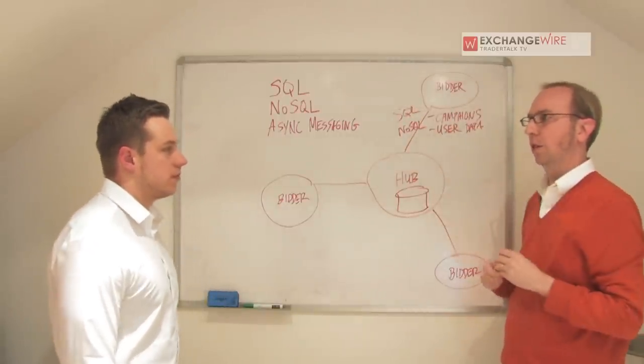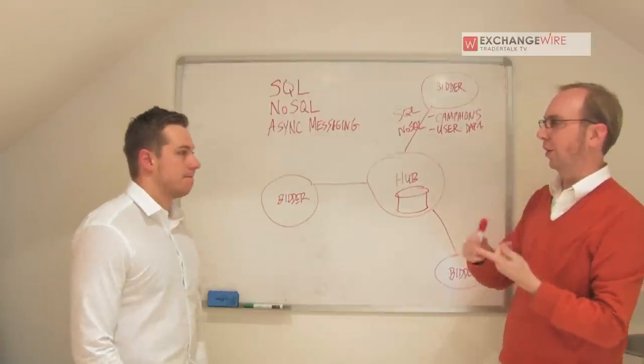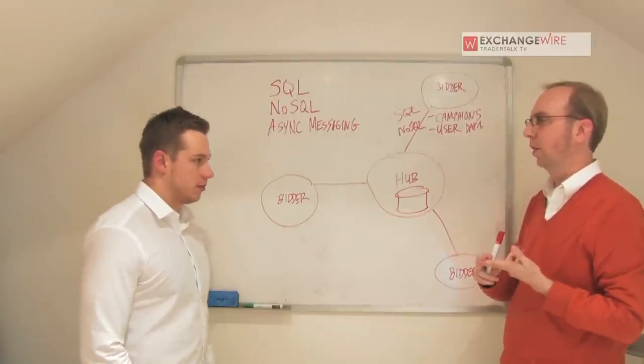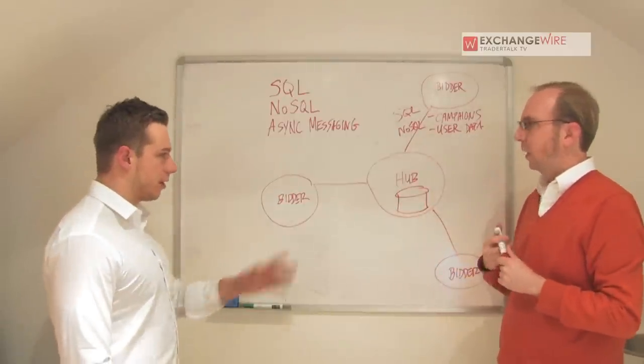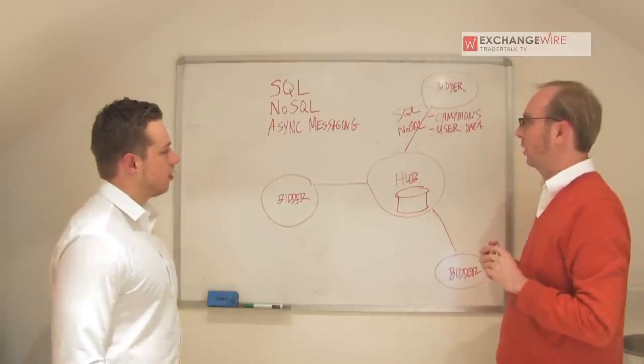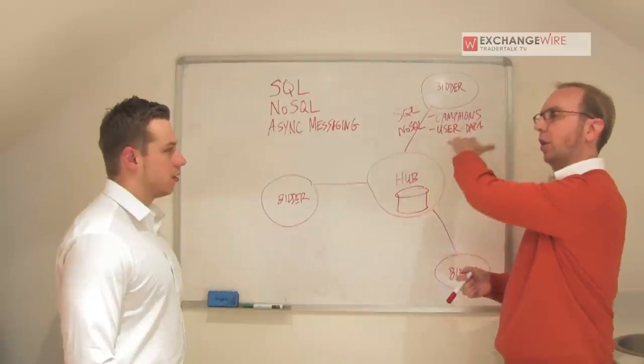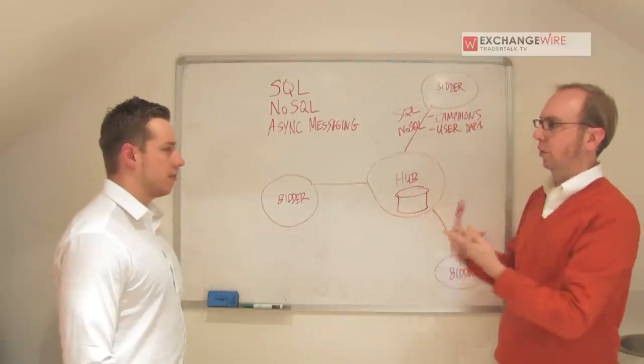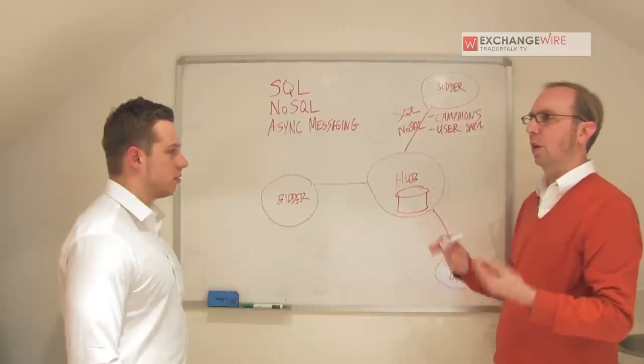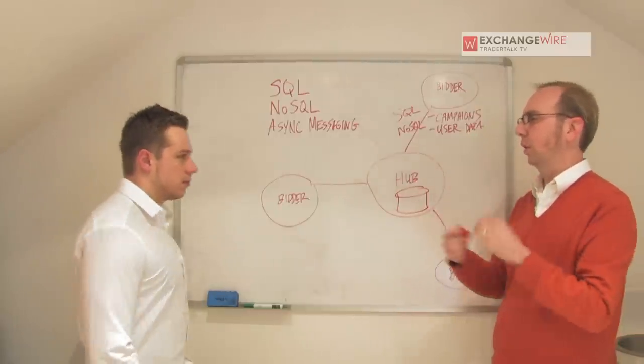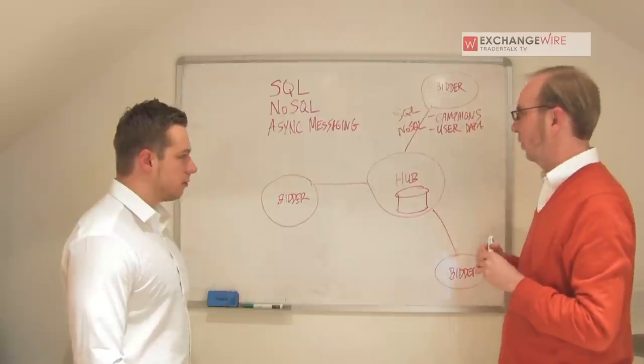Then we've got the additional problem of saying, okay, now we've processed a bid request. We're using both of these data sets to do our real-time decisioning against that. What are the campaigns and creatives that are available and eligible to be served given all the parameters? Standard filtering. And then what do we know about the user in terms of frequency capping, in terms of retargeting, in terms of propensity to click, all of these propensity models that we put in place as part of the valuation process.